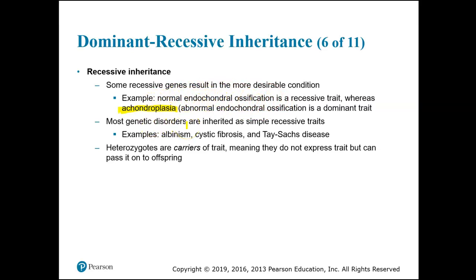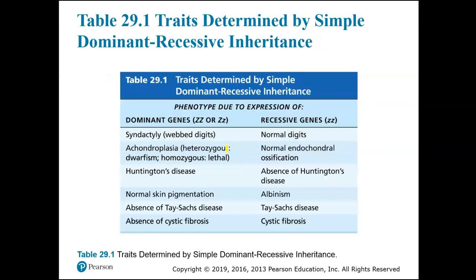There are also some genetic disorders that are recessive: albinism, cystic fibrosis, and Tay-Sachs are recessive disorders. If a person is heterozygous for a recessive disorder, we say they are carriers of that trait. That means they can pass it on to their offspring but they don't have it themselves.